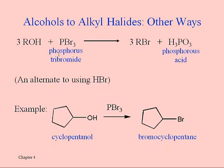Bromides can be made without using HBr, and the number one alternative is to use phosphorus tribromide, PBr3. HBr works pretty well, but we can often get a better yield or make the reaction go more quickly using PBr3. The net effect is just to make the bromide. Like SOCl2 on the last slide, PBr3 is a common alternative for putting halogens in place of OH groups. Both SOCl2 and PBr3 are two reactions you need to know.